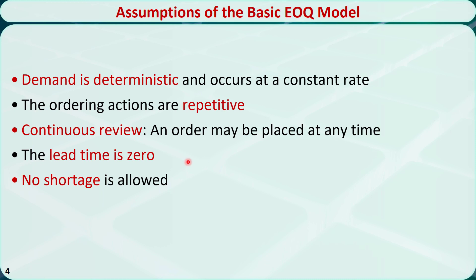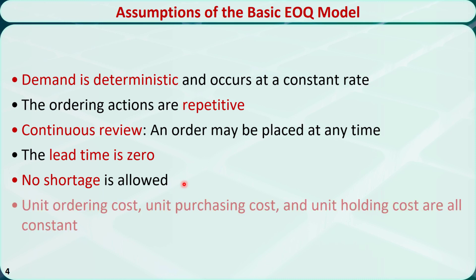That means products arrive immediately after each order is placed. No shortage is allowed — all demand is met on time. The ordering cost, unit purchasing cost, and unit holding cost are all constant. Although some assumptions are unrealistic, the basic EOQ model is still useful, and some more complex inventory models are derived from it.